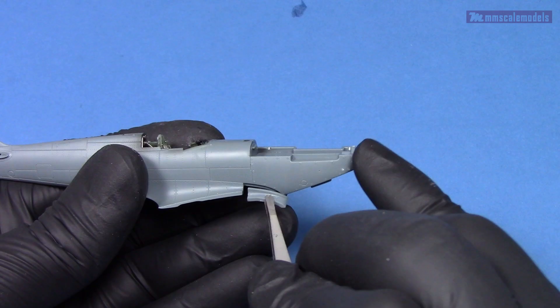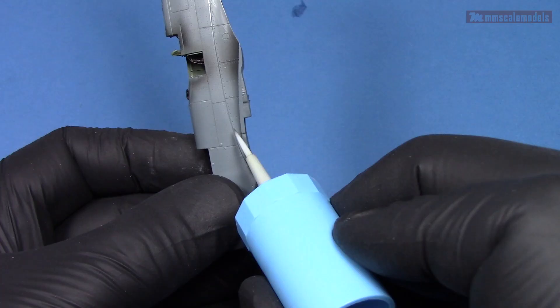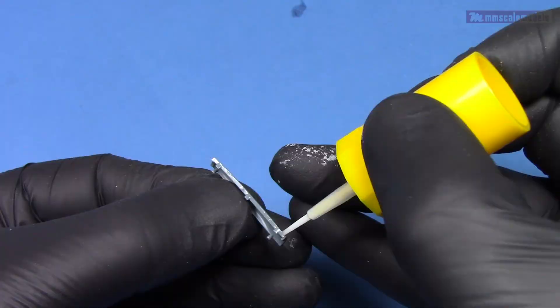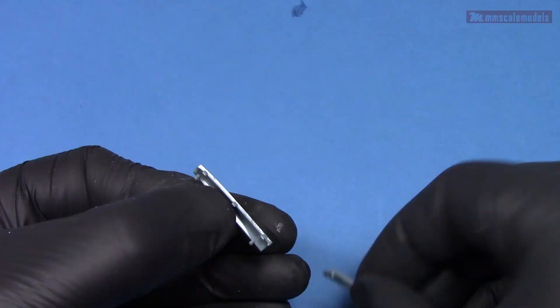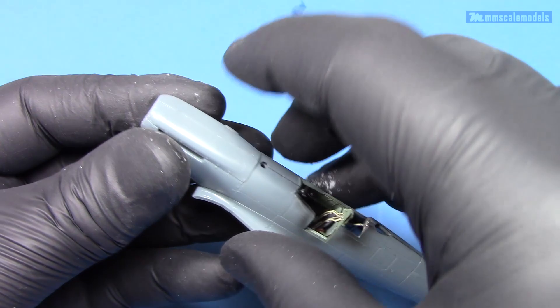For some reason the front portions of the wing root fairings are rendered as separate pieces. Fortunately that's not an issue as they fit perfectly. I don't understand why the top of the engine cowling needs to be in two pieces only to introduce an unnecessary seam line.